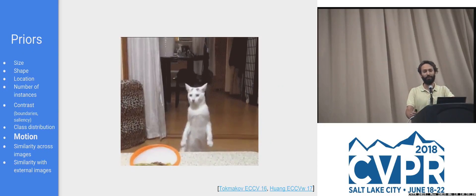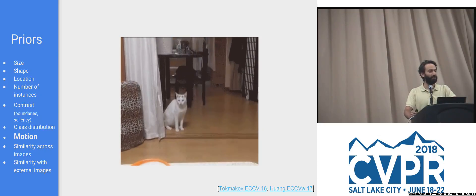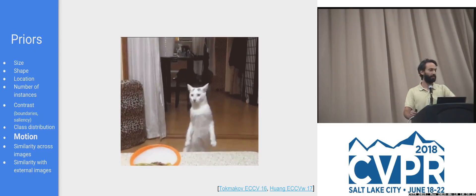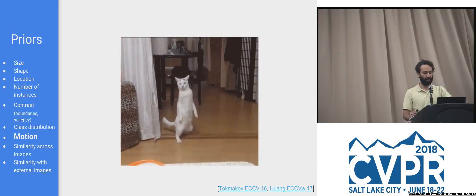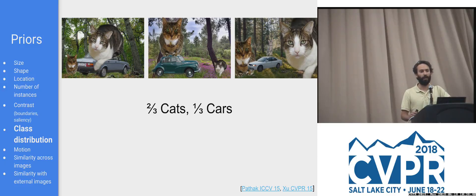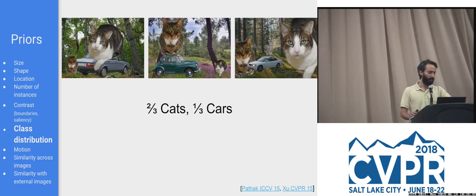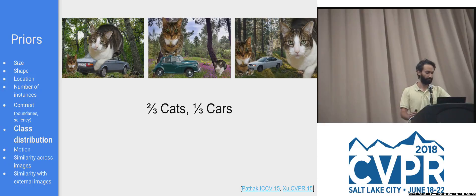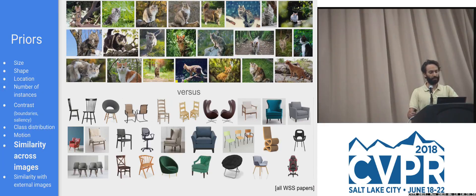Another prior is motion — if your object was moving, you can use optical flow to estimate its contours. This has been explored for object detection and pixel labeling. Yet another, more obscure one: objects occur with some frequency in the world, and if your model is amenable you can inject that into your optimization problem as a prior on the distribution. For example, cats on top of cars — we know only so many cats go onto cars, so we know the relation between categories.